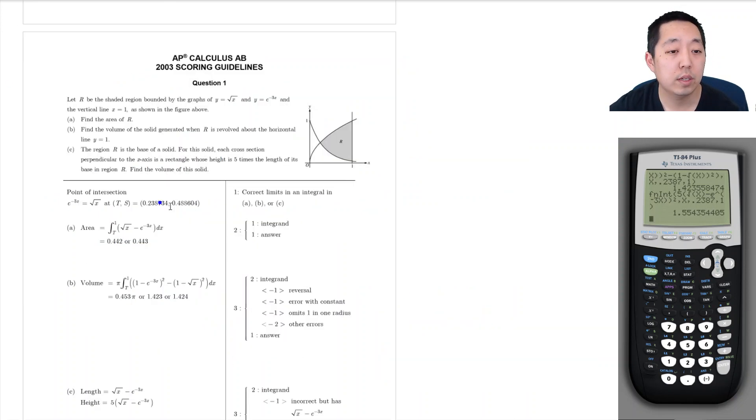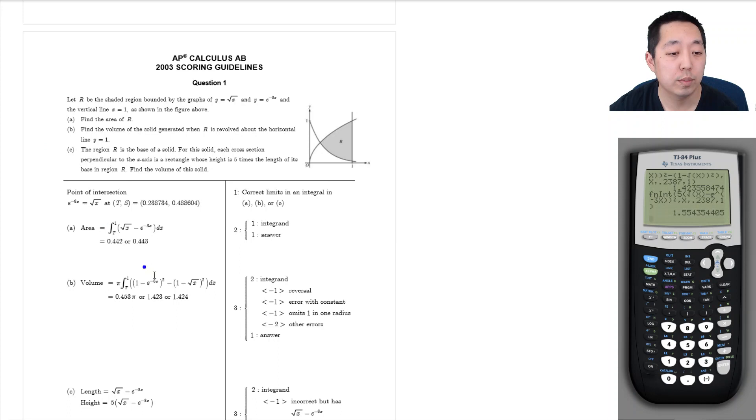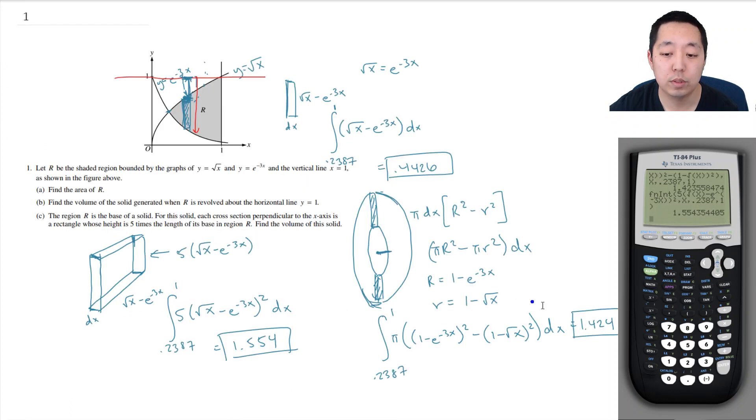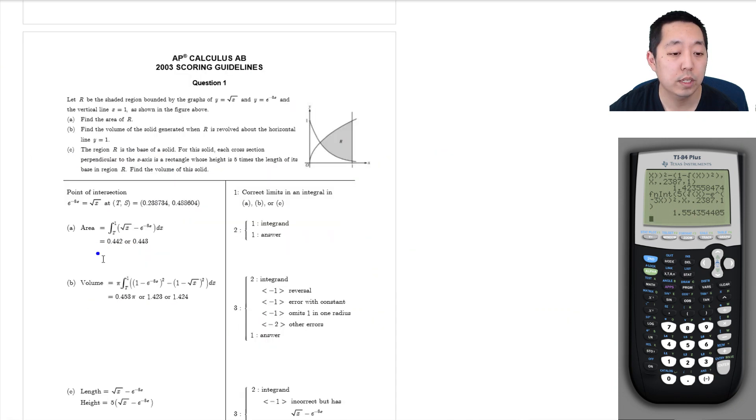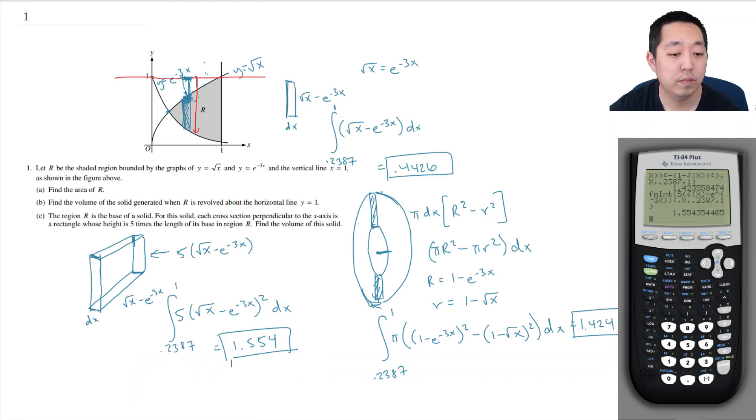So let's see how the solutions look for this one. 0.442443. Is that what I got? Yeah. And then 1.423 or 1.424, 1.424 is what I got. And then here volume is 1.554. That's what I got too. So hope you found that helpful. I'll see you in the next video.